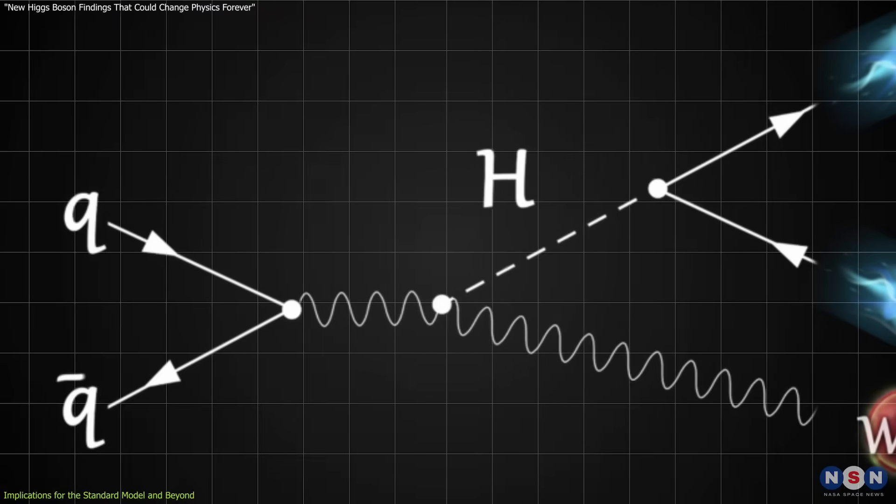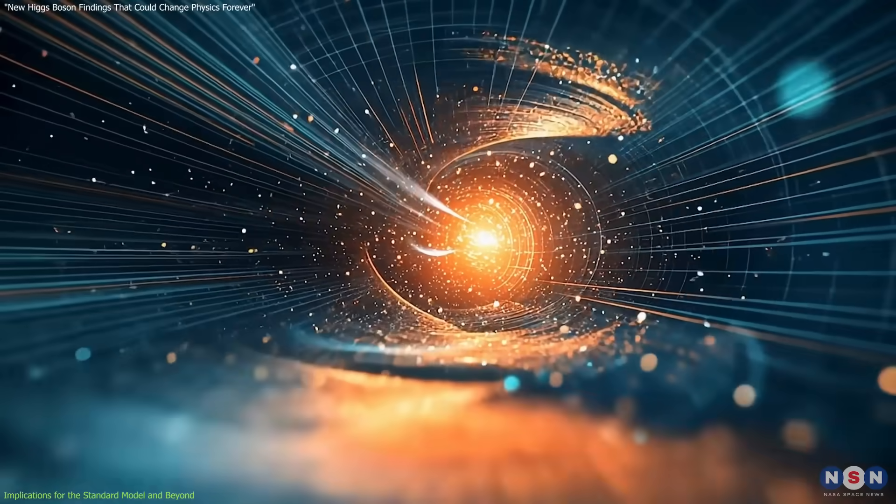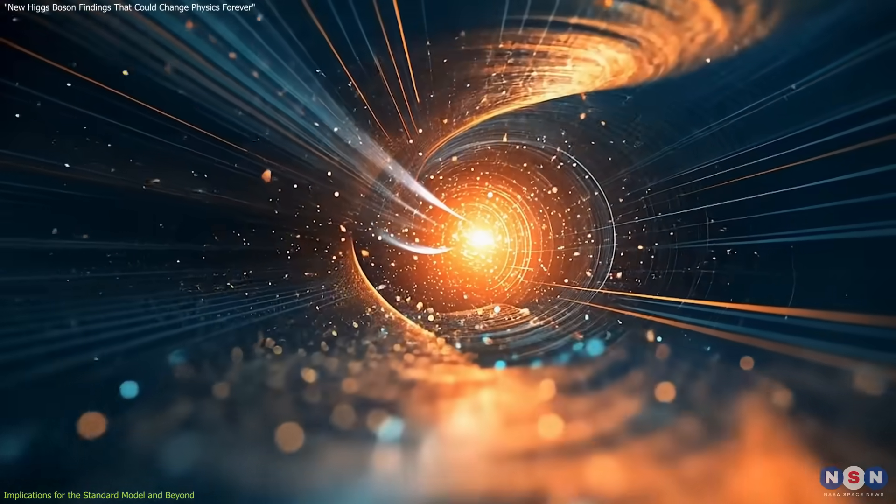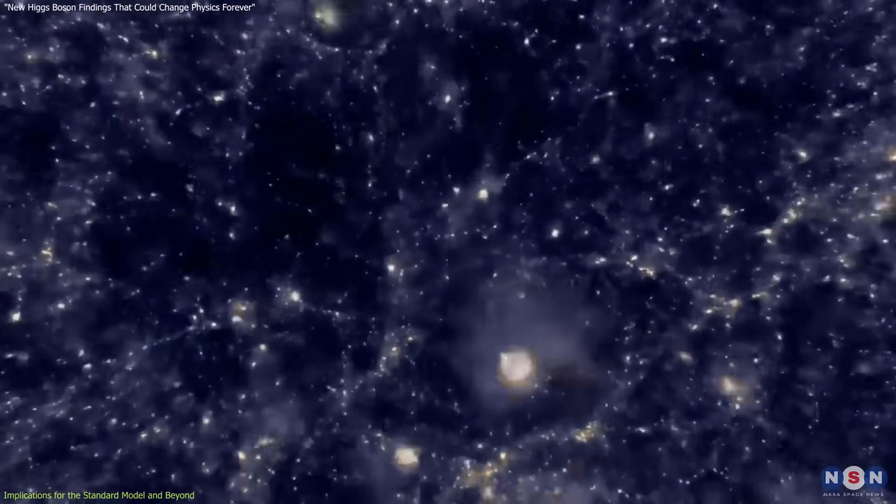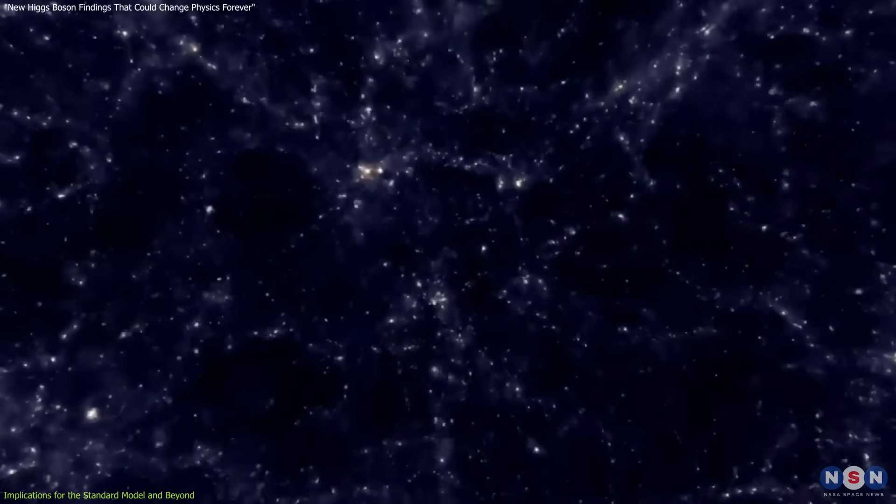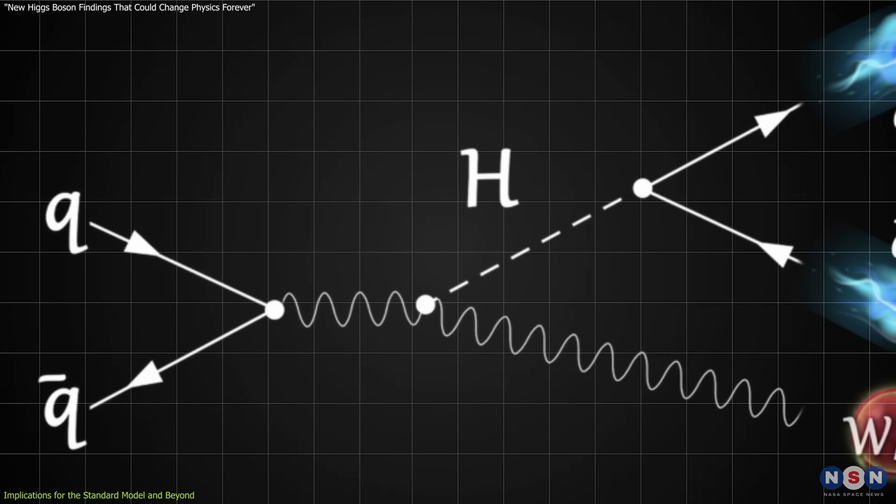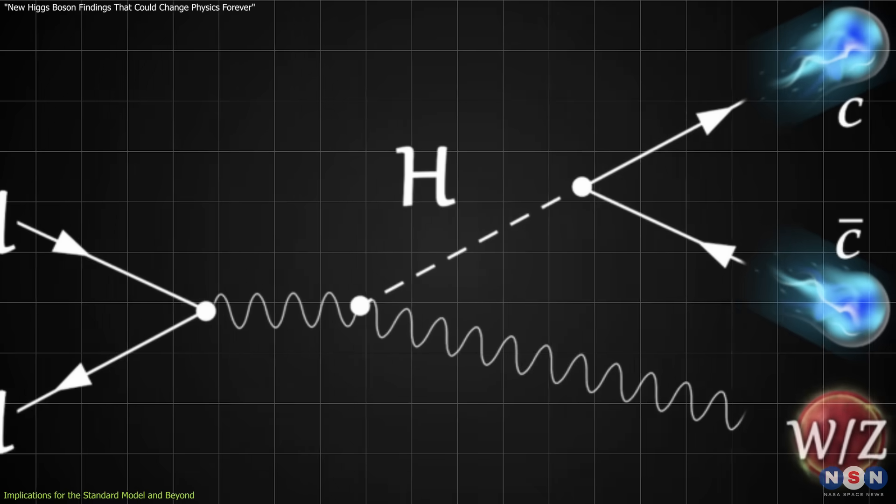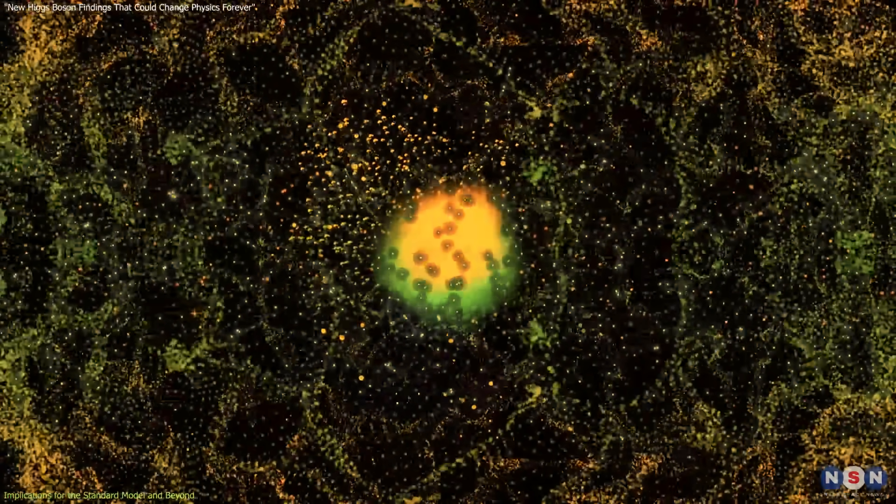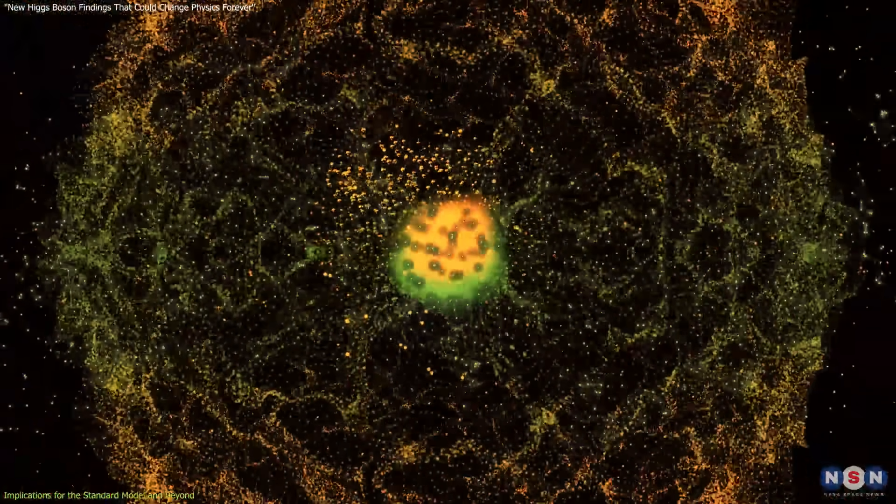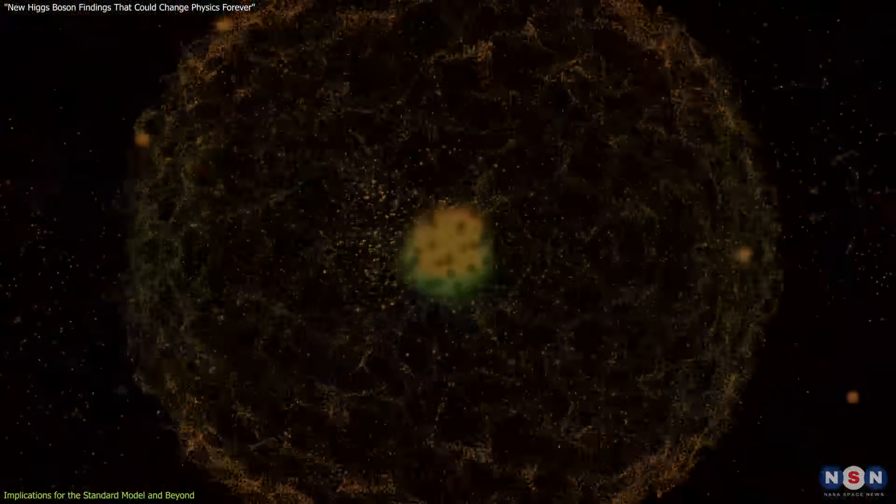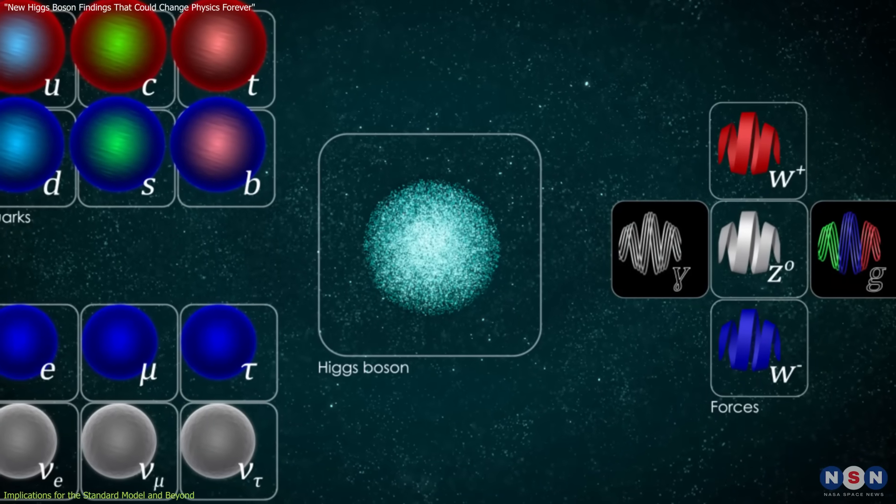Anomalies in decay patterns, for example, could point to undiscovered dimensions or interactions, which would fundamentally alter our understanding of the universe. The search for the Higgs boson decaying into charm quarks remains one of the most intriguing challenges. If observed, it would provide a rare glimpse into how the Higgs interacts with second generation quarks, offering insights that could extend the Standard Model.